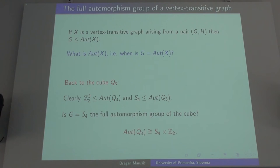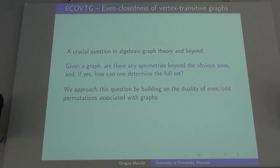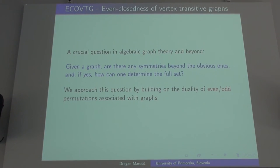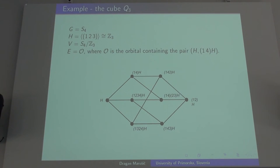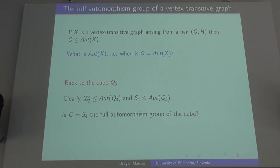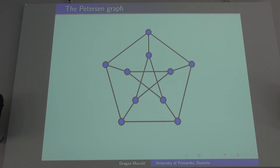The second example I want to view is the Petersen graph. But before I do that, I would like to make a definition: if an automorphism of the vertex transitive graph acts as an even permutation, we call it an even automorphism; we call it an odd automorphism if it acts as an odd permutation. All automorphisms of the cube are even permutations. The cube is a symmetric cubic graph; those graphs have been investigated extensively.